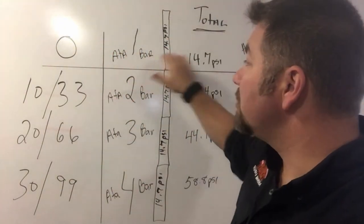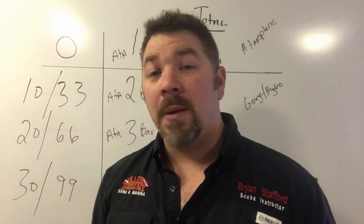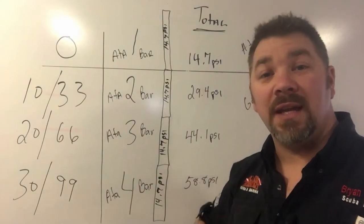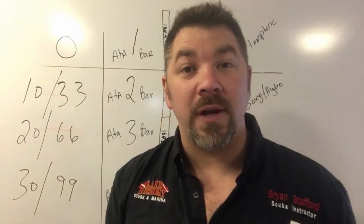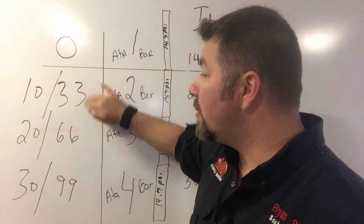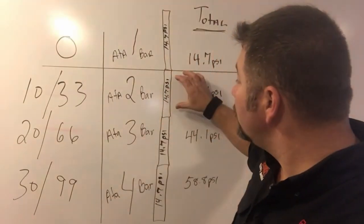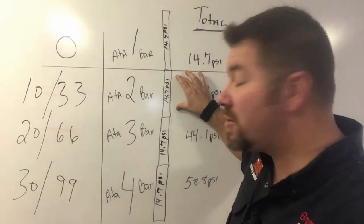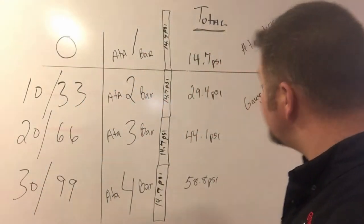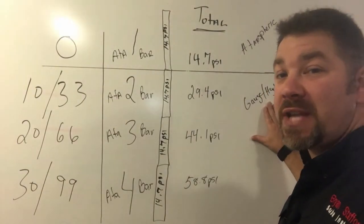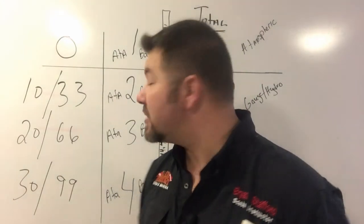Going back to your open water class and manual, your instructor showed you a chart like this — our atmospheric chart. Every 10 meters or 33 feet of salt water (or 34 feet for fresh water) that we descend, we go through a new pressure change, increasing the pressure on our body by an additional 14.7 psi. That pressure is called gauge pressure or hydrostatic pressure. 'Hydro' simply means water — it's the water pressure pushing in on our body.